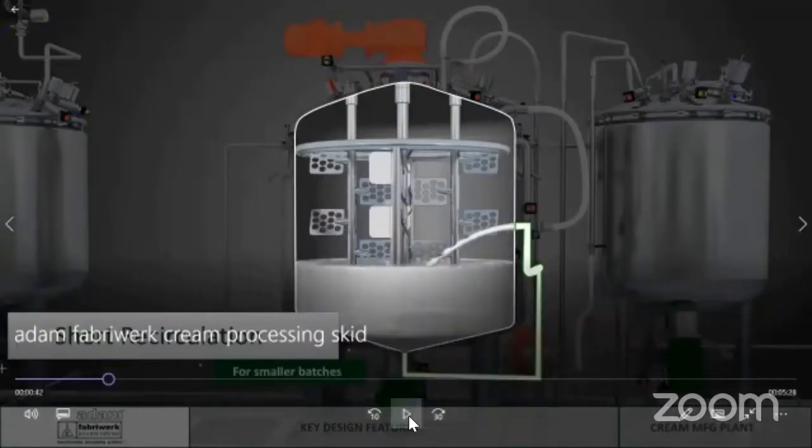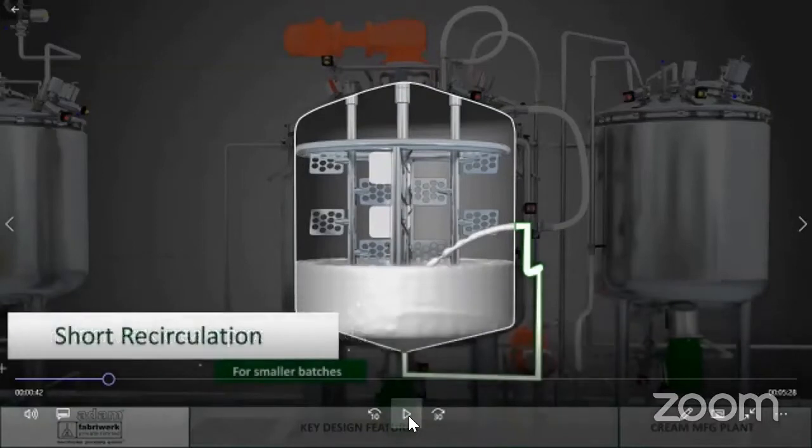The special feature that you see here is a short recirculation path for smaller batches. This is very important for processing smaller than half the volume of the batch size of the vessel. If the vessel capacity is 1000 kilos and you have to process 400 kilos, then this short recirculation loop takes care of the shorter recirculation. This ensures that the product comes through the path directly into the vessel without shearing or damage.